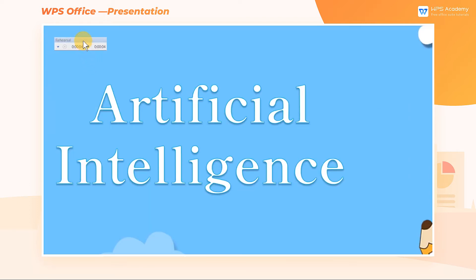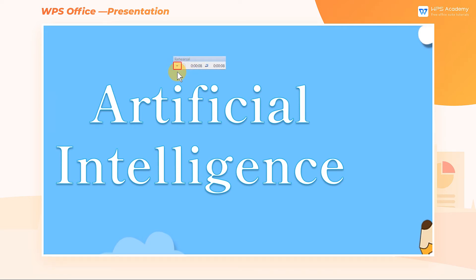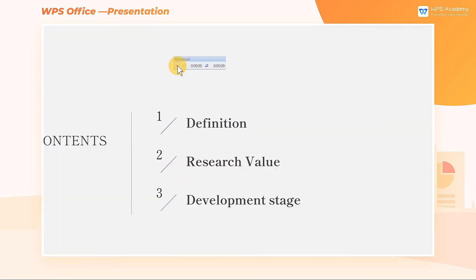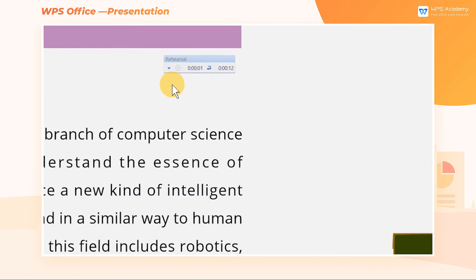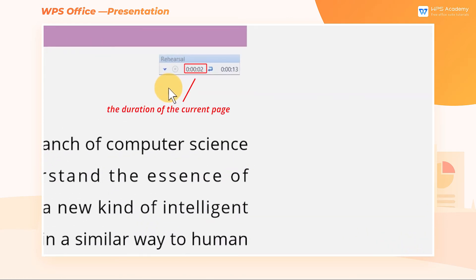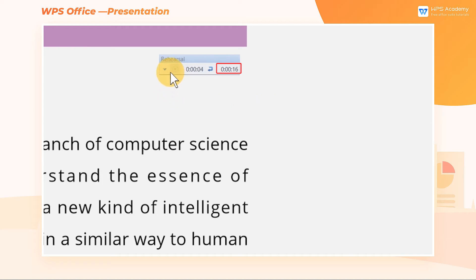In the upper left corner, there's a timer that can be moved freely. Click the Inverted Triangle icon on the left, or click to jump to the next slide, and then the slide timer will be restarted while the slide total time continues to be recorded.